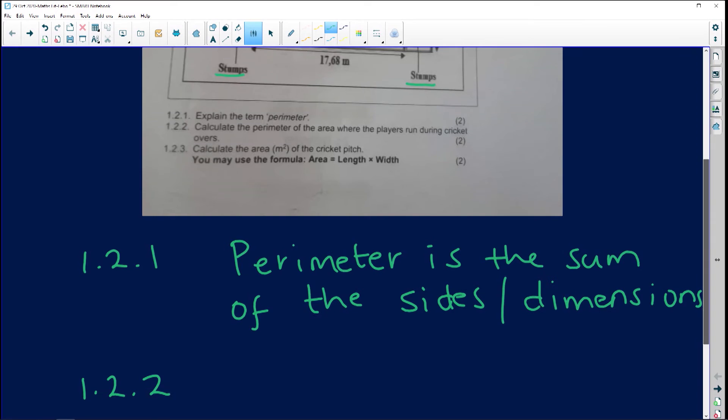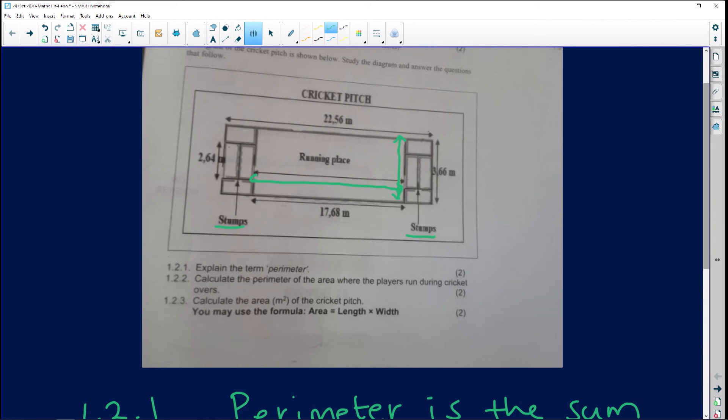The next question then says to us, calculate the perimeter of the area where the play is run during the cricket overs. So it means that we're going to calculate the perimeter, meaning that we're going to add now the sides according to the definition that we have been given. Let's go and surround, not surround, but circle sort of what we are talking about. So I'm going to use blue.